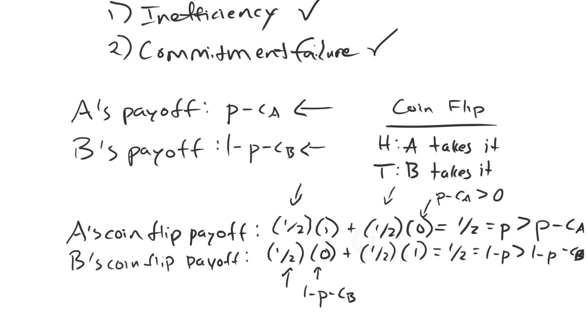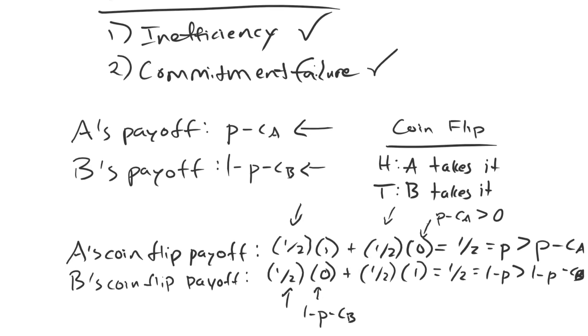So we now see that issue indivisibility is a type of commitment problem because it results in an inefficient outcome. There is an alternative dispute mechanism that will resolve the problem without having to incur that inefficiency, but we can't credibly commit these parties to abiding by the result of that coin flip. Hope you enjoyed this, and I'll see you next time. Take care.